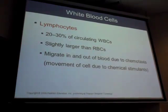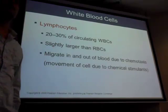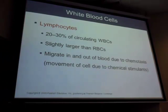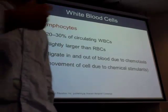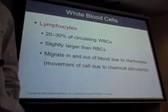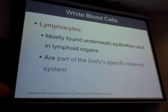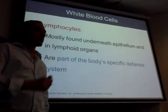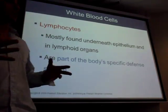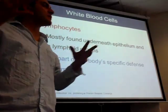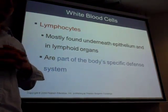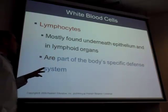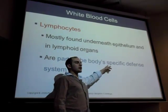Moving on to lymphocytes. Lymphocytes are the second most numerous leukocytes — 20 to 30 percent of all white blood cells. Their size is slightly larger than a red blood cell. Lymphocytes are part of the body's specific defense system. In a few minutes you'll make a flowchart together to organize the cells of the immune system. Another word for 'specific' is 'adaptive.'